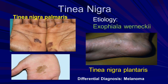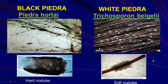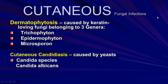This is the picture of tinea palmaris and tinea nigra plantaris. The differential diagnosis includes melanoma — do not consider this to be melanoma. Also shown is black piedra in the hair with hard nodules and sharp nodules. White piedra is caused by Trichosporon species.